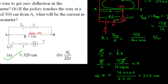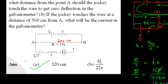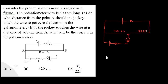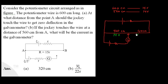For the second part, if the jockey touches the wire at a distance of 560 cm from A, what will the current in the galvanometer be? This is not null deflection, so we have to redraw the circuit. The 600 cm wire has 15R resistance. The resistance of 560 cm wire comes out to be 14R, and the remaining segment has R resistance.